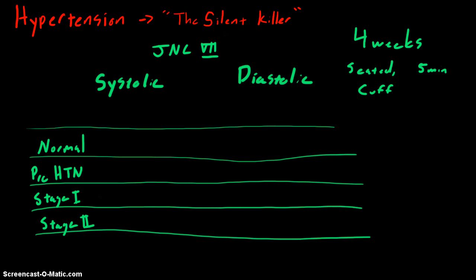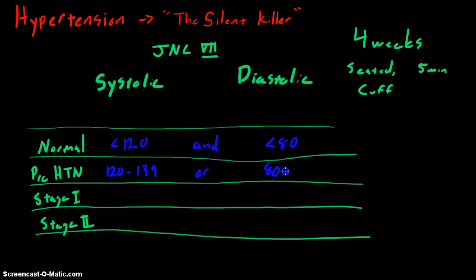Normal blood pressure is a systolic of less than 120 and a diastolic of less than 80. Prehypertension is a systolic of 120 to 139 or a diastolic of 80 to 89. Stage 1 hypertension is a systolic of 140 to 159 or a diastolic of 90 to 99.